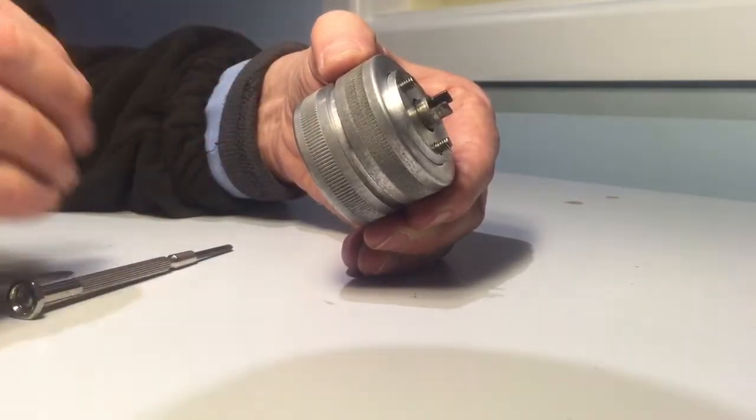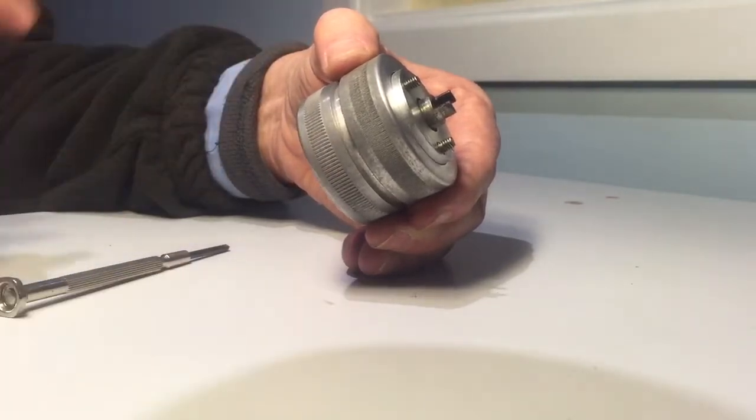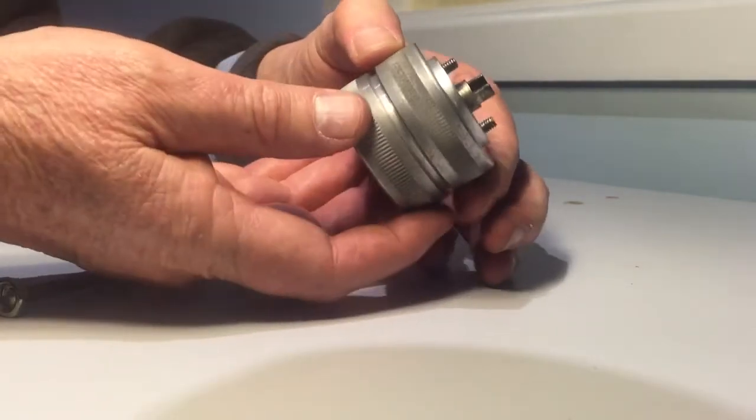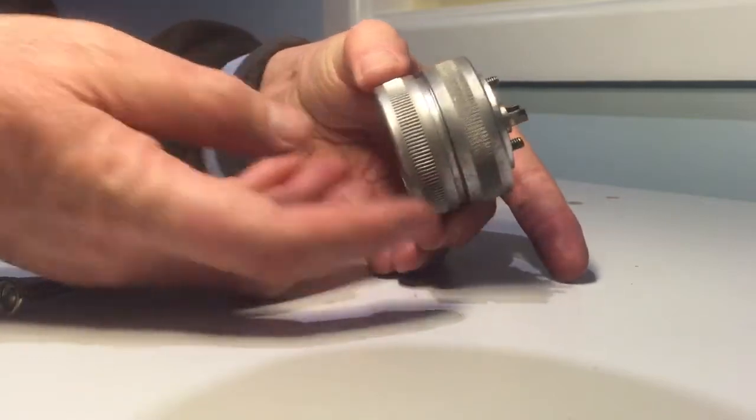The trim knob itself is comprised of two pieces, it's the same on the dimpled version, and it's a left-hand thread.